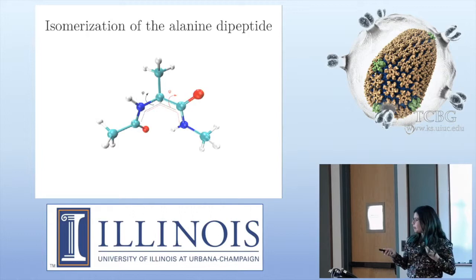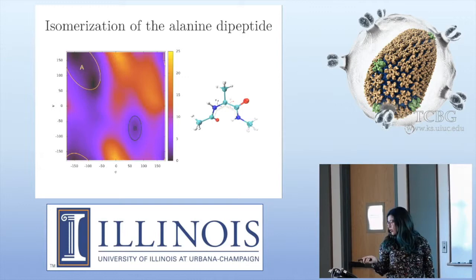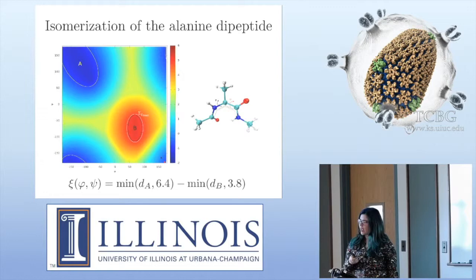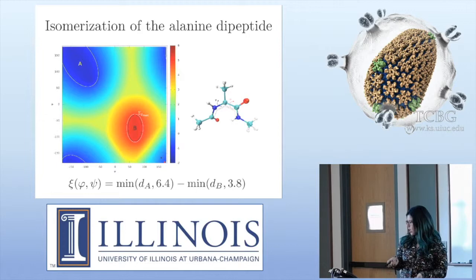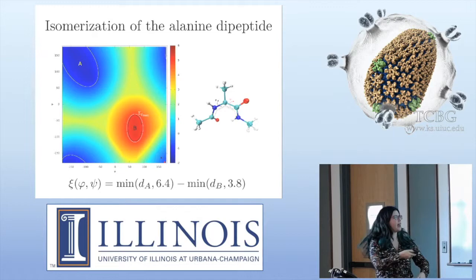The example in the tutorial is the isomerization of alanine dipeptide. To set A and B, we use two ellipses that cover the wells of the free energy landscape. The reaction coordinate is a measure of the distance from these regions — for A it's the distance from the two foci of the ellipse, and the same for ellipse B. Z_max is set to be just inside B.